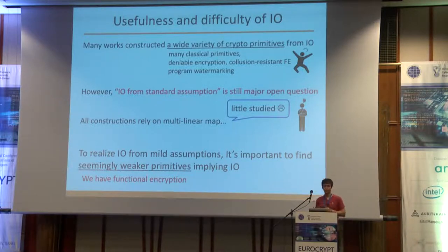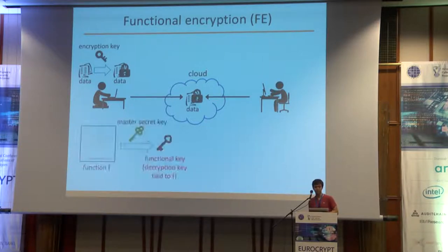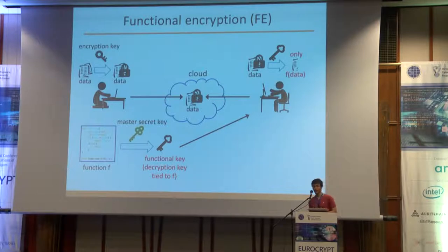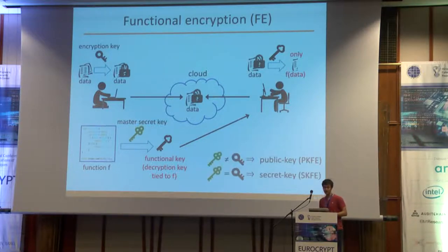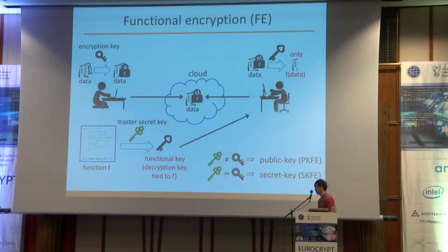To realize I.O. from more mild assumptions, it's important to find seemingly weaker primitives implying I.O. Some previous works showed functional encryption is such a primitive. In functional encryption, we can encrypt data using an encryption key, similarly to ordinary encryption. By using the master secret key, we can generate a functional key — a decryption key tied to some function F. By decrypting the encrypted data using this functional key, only F of the data is decrypted; any other information remains hidden. If the encryption key and master secret key are different and we can make the encryption key public, we call this public key functional encryption, or PKFE. If they are the same, we call it secret key functional encryption, or SKFE.